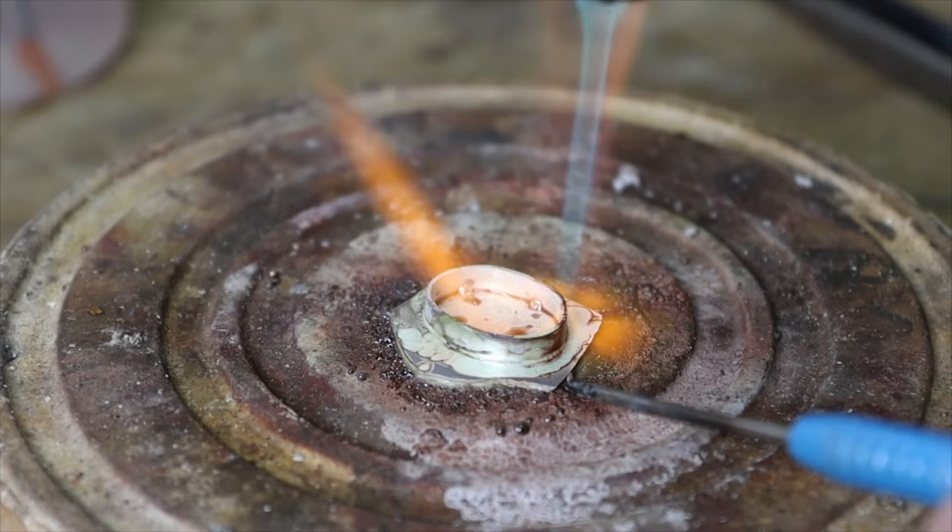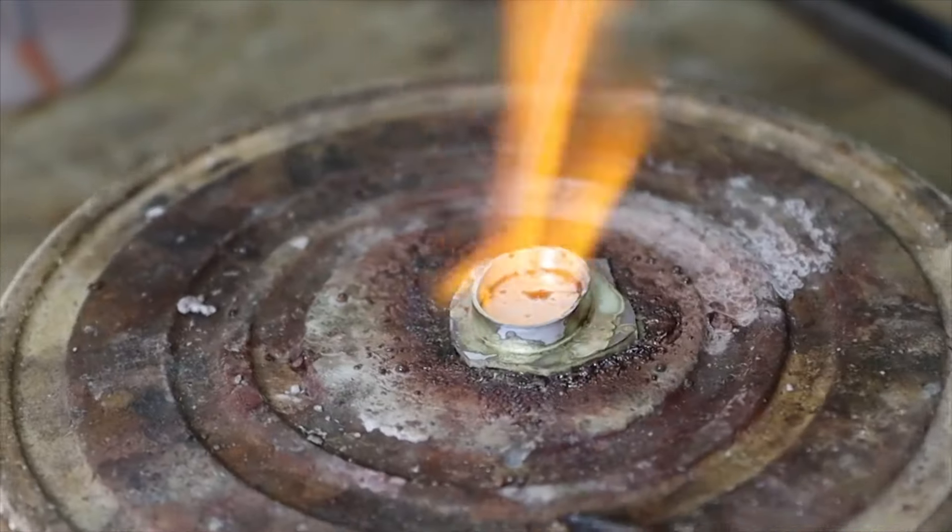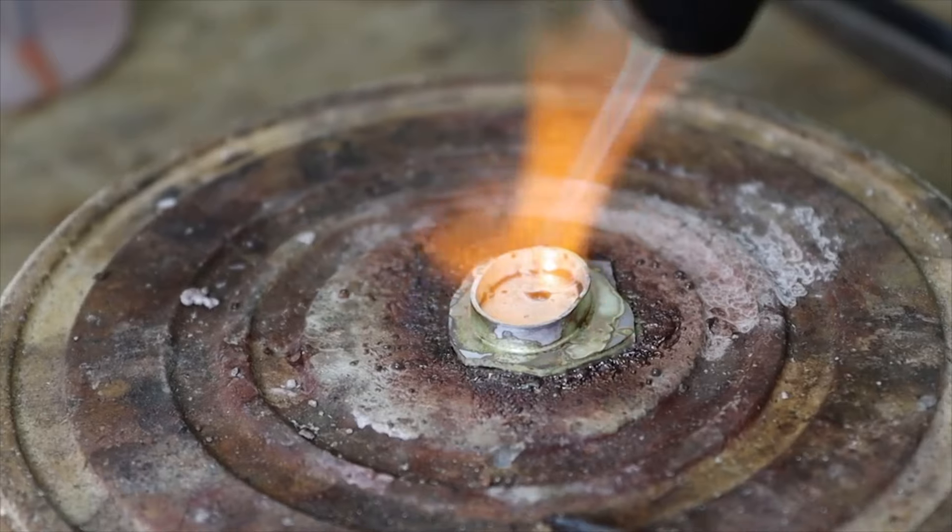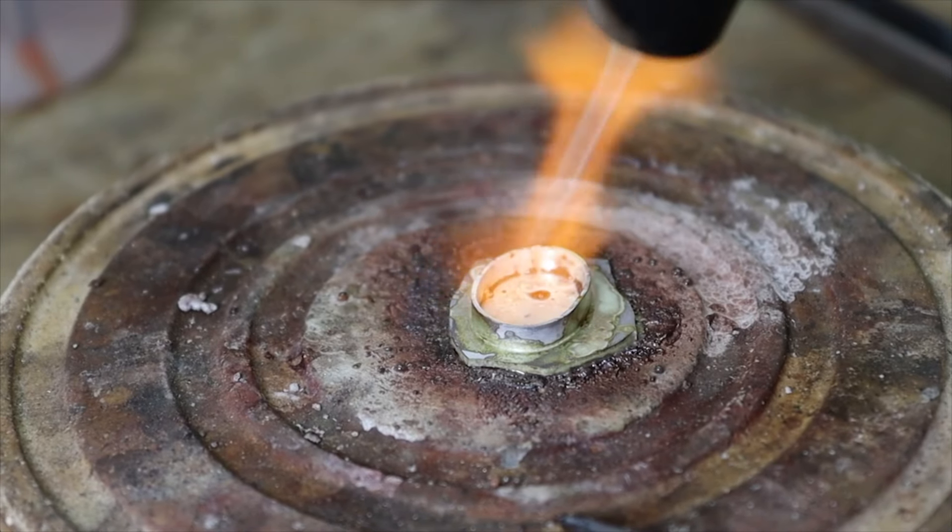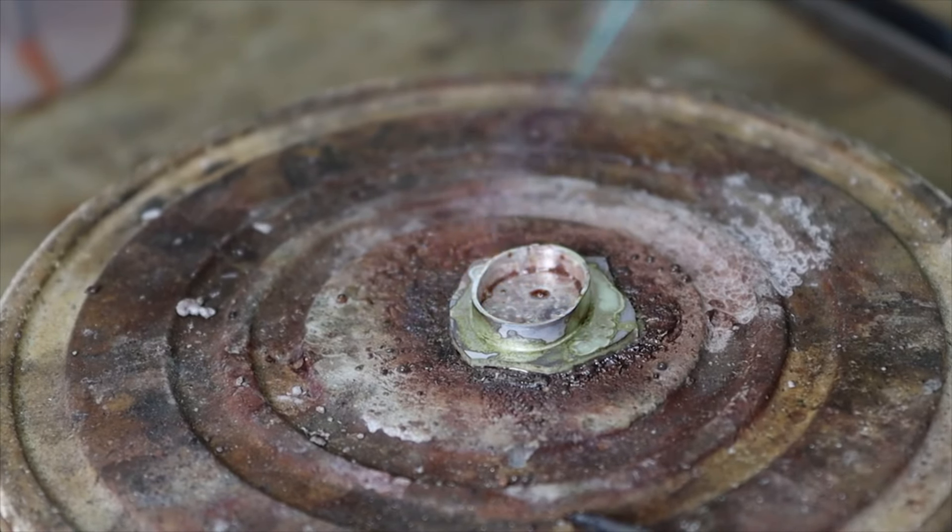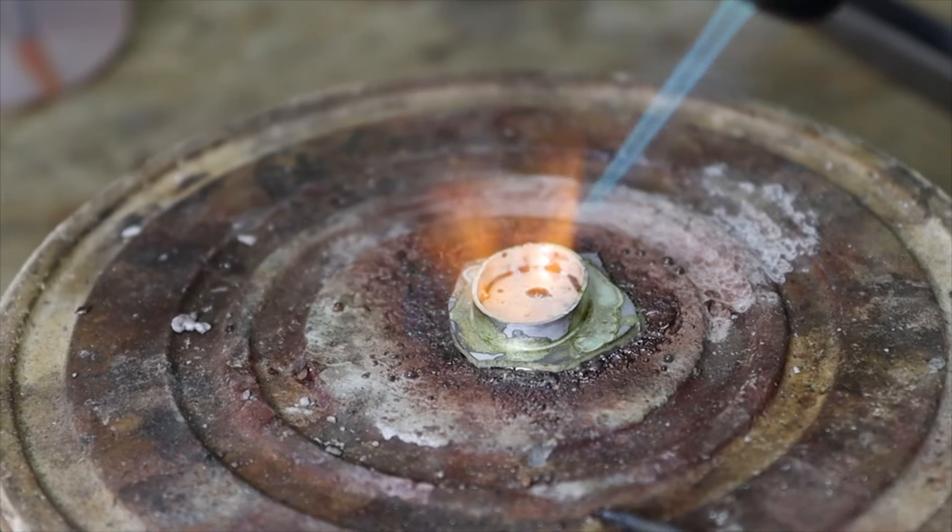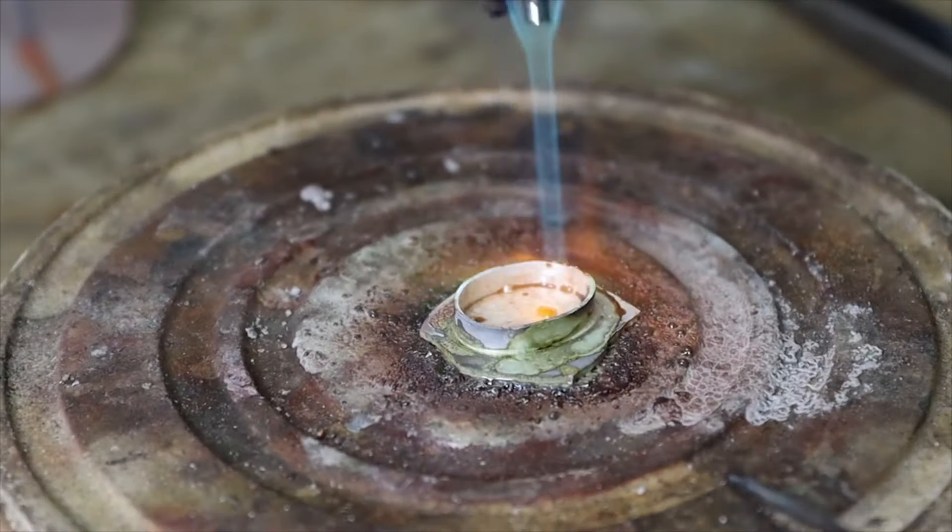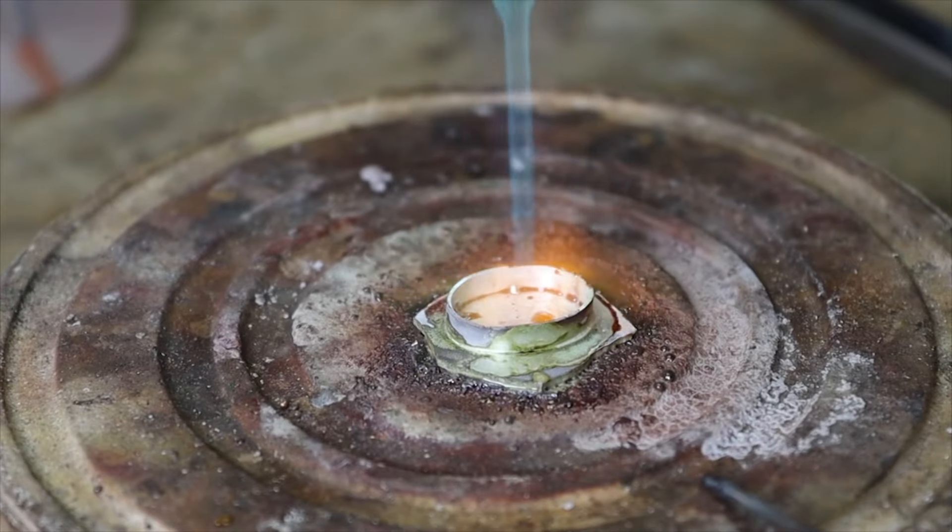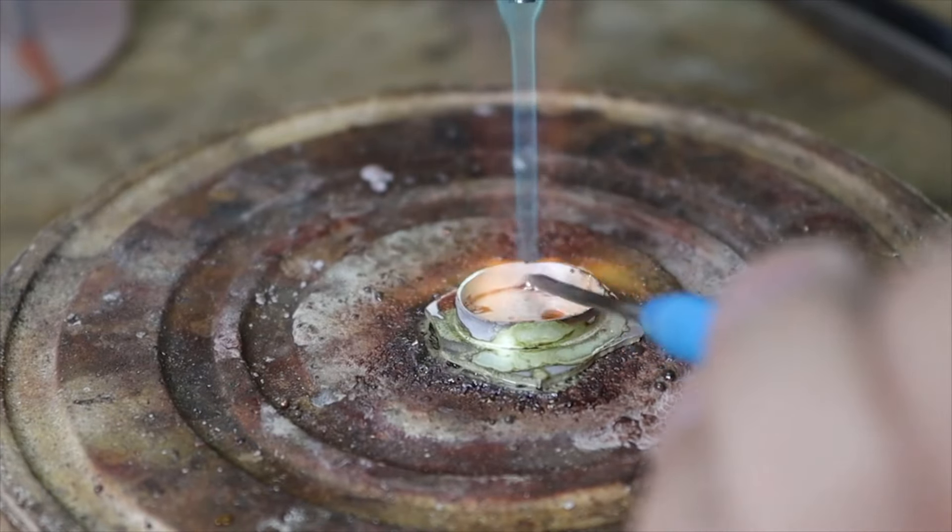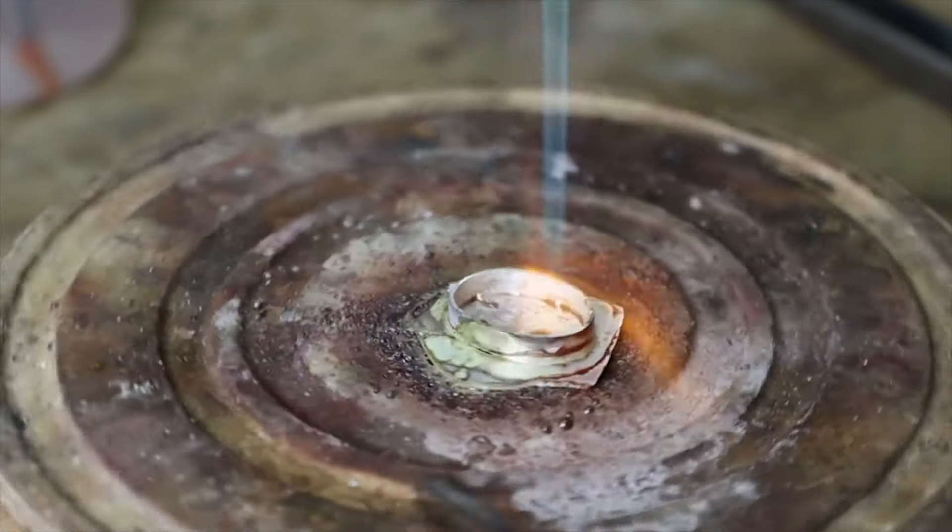And here you can see that my solder is starting to melt. So I am guiding the solder with my flame and making sure that the solder flows in between the seams. And remember, solder will flow to the hottest point. So make sure that your flame is right there where you want the solder to flow.